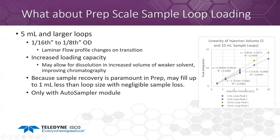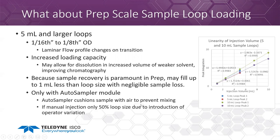Only with our auto sampler module can we get these kinds of accuracies — with manual injection, it's harder to get reproducible injections. With the auto sampler, we also have an air gap to prevent mixing so we don't get a lot of band broadening and laminar flow issues. The other thing we can do is use a bracketing solvent — if you're using DMSO, we'll take up a small bubble of DMSO before and after your compound so that as we load it onto the column, it doesn't crash out and cause any problems.